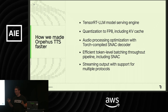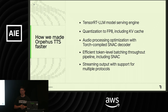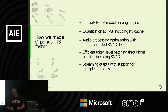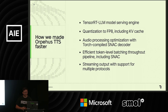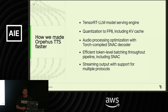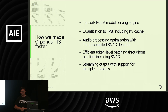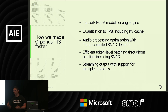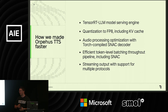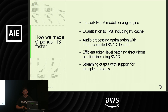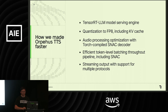A lot of the other runtime work is audio-specific rather than LLM-specific. We use SNAC, which is an audio decoder — not an actual tasty snack, unfortunately. We use torch.compile with PyTorch inference mode on the audio decoder and run it on the GPU. We also make sure that token-level batching works well throughout the entire pipeline and support multiple streaming protocols.